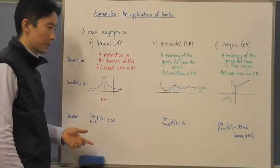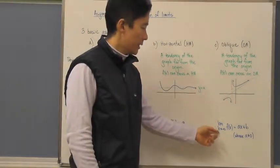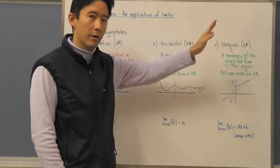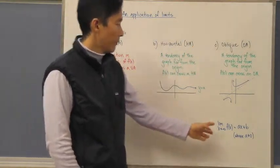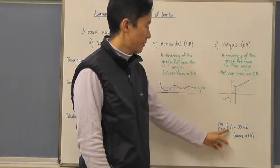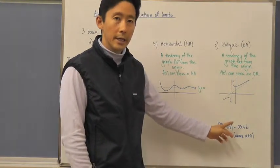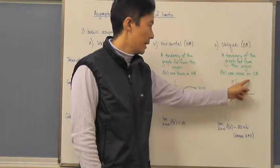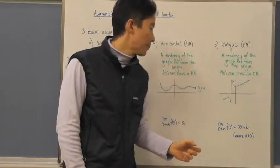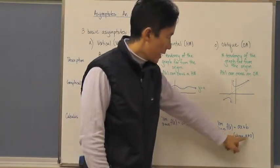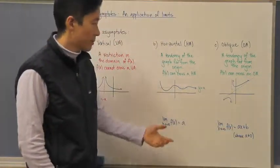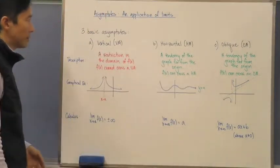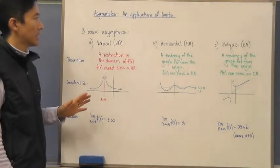From a calculus approach, if we take the limit as x approaches infinity of f of x, it approaches the value given by that particular line — represented by the dotted green line. Note that the slope a cannot equal zero, because if a were zero we would have the horizontal asymptote situation instead.